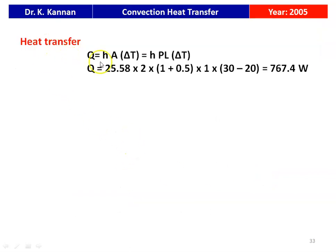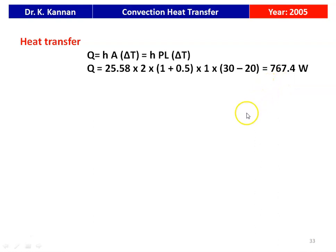Heat transfer q = h × A × ΔT. The area = perimeter × length. So q = 25.58 × 2 × (1 + 0.5) × 1 × (30 − 20) = 767.4 W. The closest answer is 769 watts, which is the answer for the heat transfer per meter length.